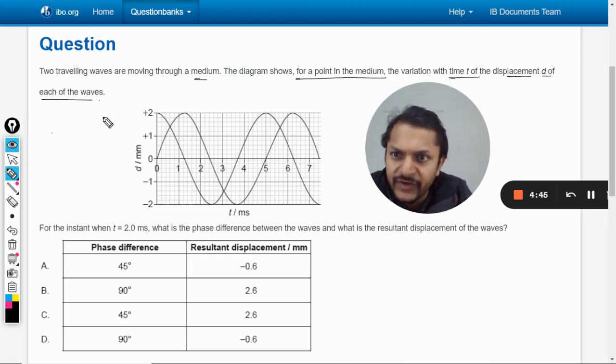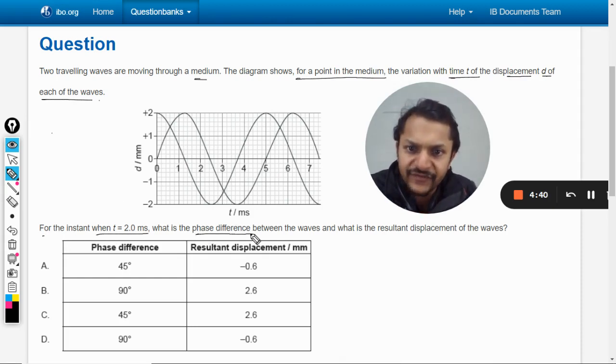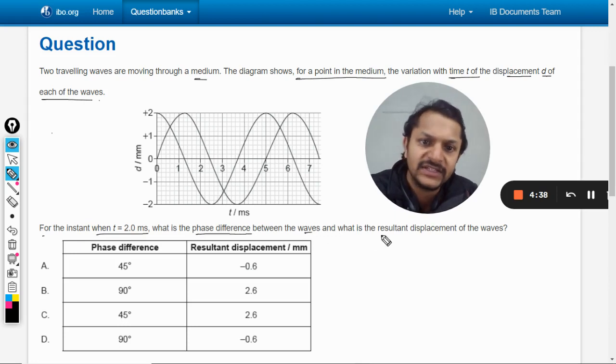For the instant when t is equal to 2 milliseconds, what is the phase difference between the waves and what is the resultant displacement of the waves? My dear students, first of all we must understand what is happening here.